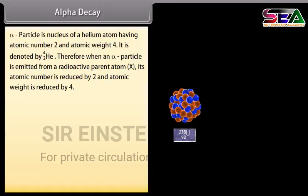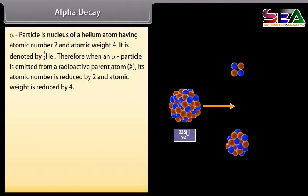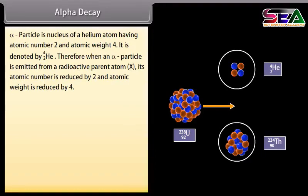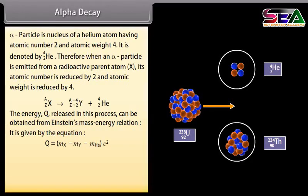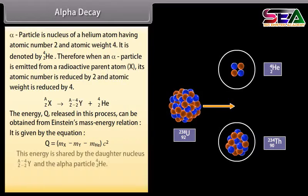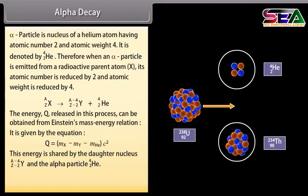Alpha decay: An alpha particle is the nucleus of a helium atom, having atomic number 2 and atomic weight 4. When an alpha particle is emitted from a radioactive parent atom X, its atomic number is reduced by 2 and atomic weight is reduced by 4. The energy Q released in this process is given by Q = (Mₓ − M_Y − M_He) · c². This energy is shared by the daughter nucleus and the alpha particle.